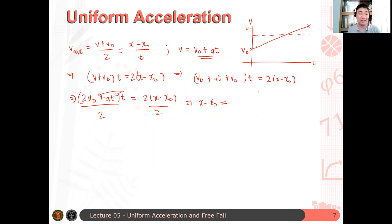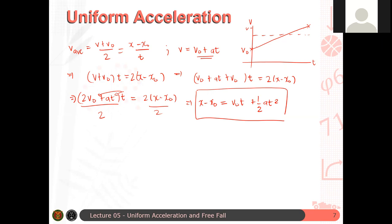So, (v not plus at plus v not) multiplied by t equals 2(x minus x0). Wait, there are two v not here. So I'll make it 2v not plus at, quantity t, equals 2 times (x minus x0). And then, what I will do finally is to multiply this by t and then divide both sides by 2. So what happens? This gives you x minus x0 equals what? There's a 2 here that divides. So, I have v not, but there's t here. So it's v not t. Plus, half of at. One half at squared. That's one of your kinematic equations. Exactly. So, I can write this as x equals x0 plus v not t plus one half at squared. This is called the position-time function.